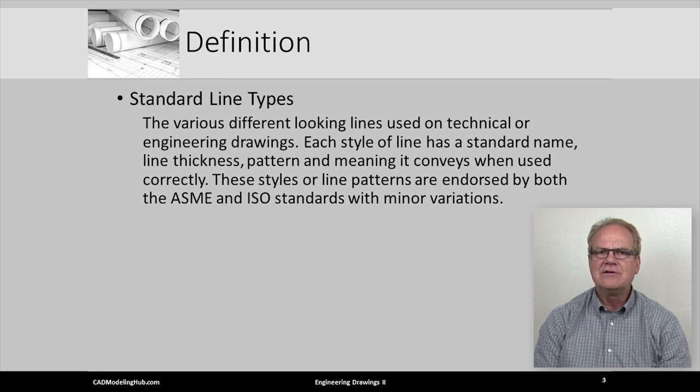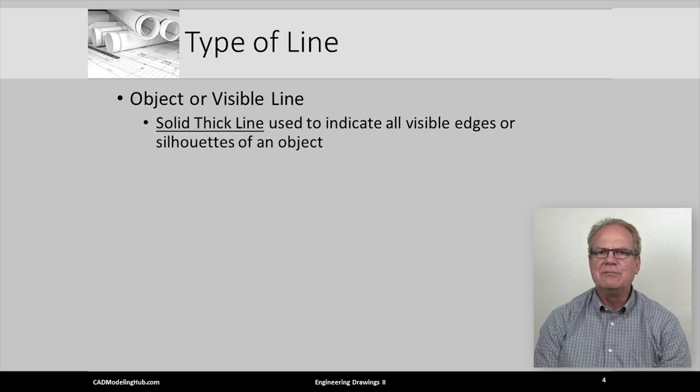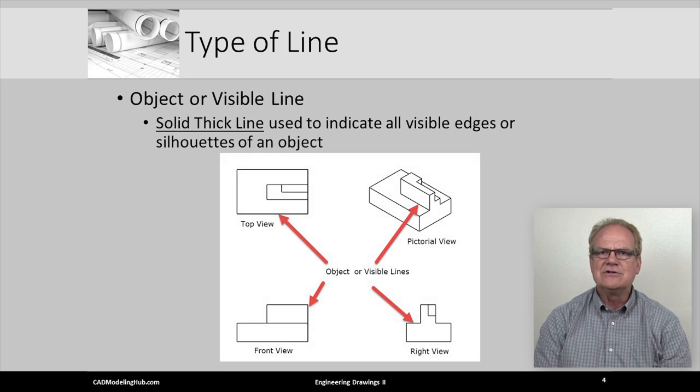Of the 15 or so line types we will be covering in this lecture, the most important line type is the object, or visible line. It is a solid, thick line used to represent all visible edges or silhouettes of an object projected onto an orthographic view plane. This illustration shows the three orthographic views of the object pictured in the right upper corner. Notice all of the lines drawn in the top, front, and right views are solid and thick.